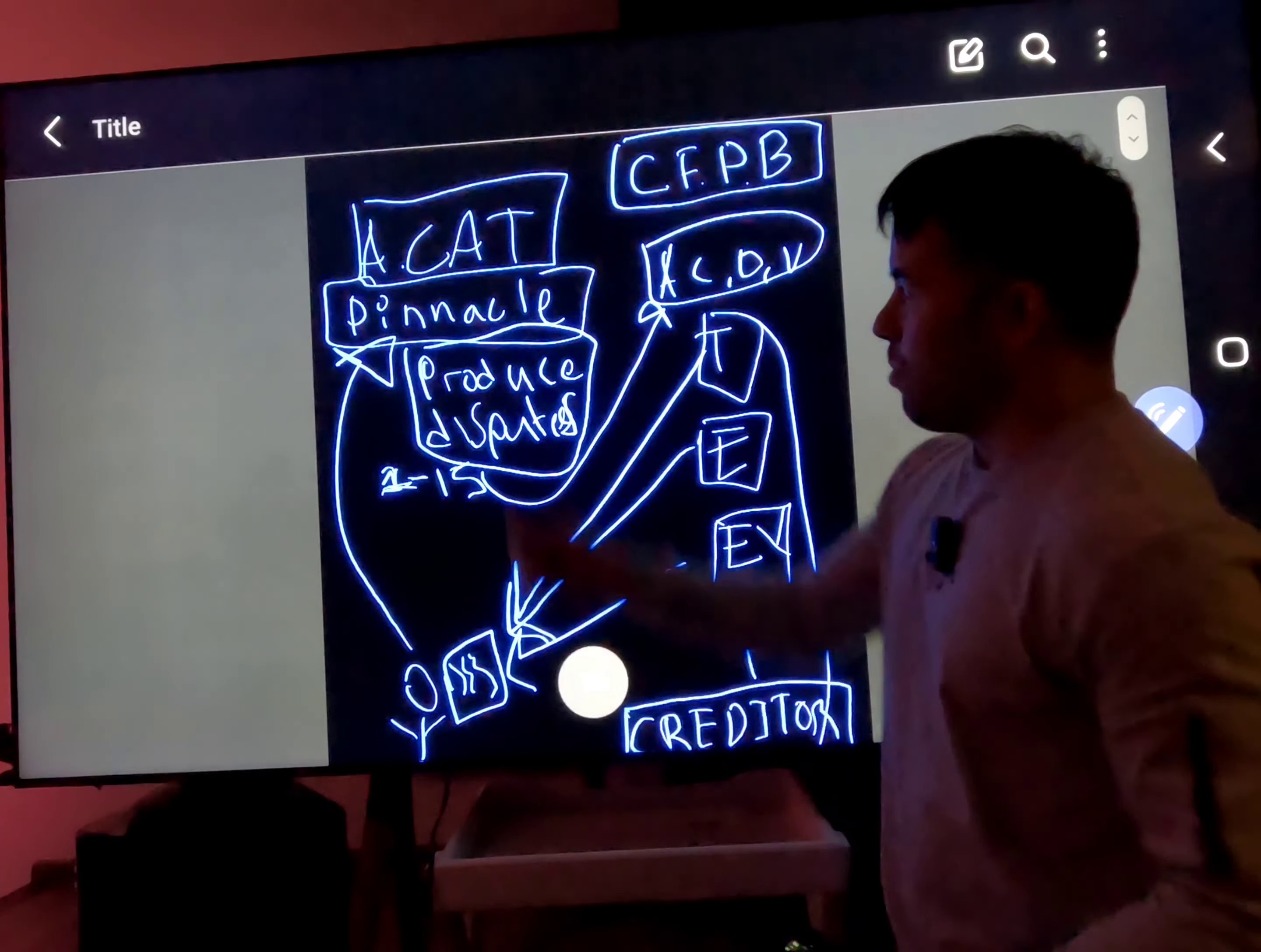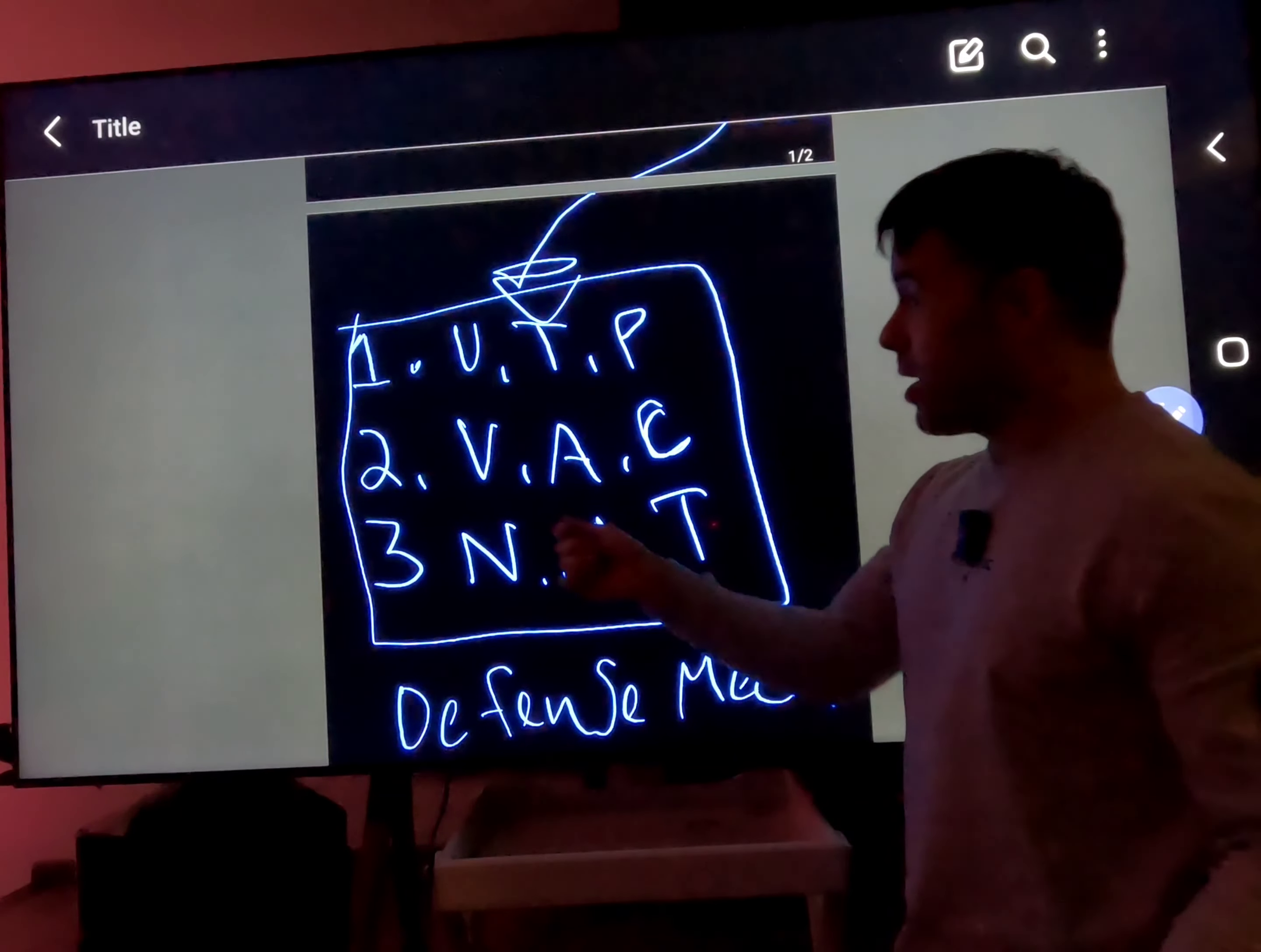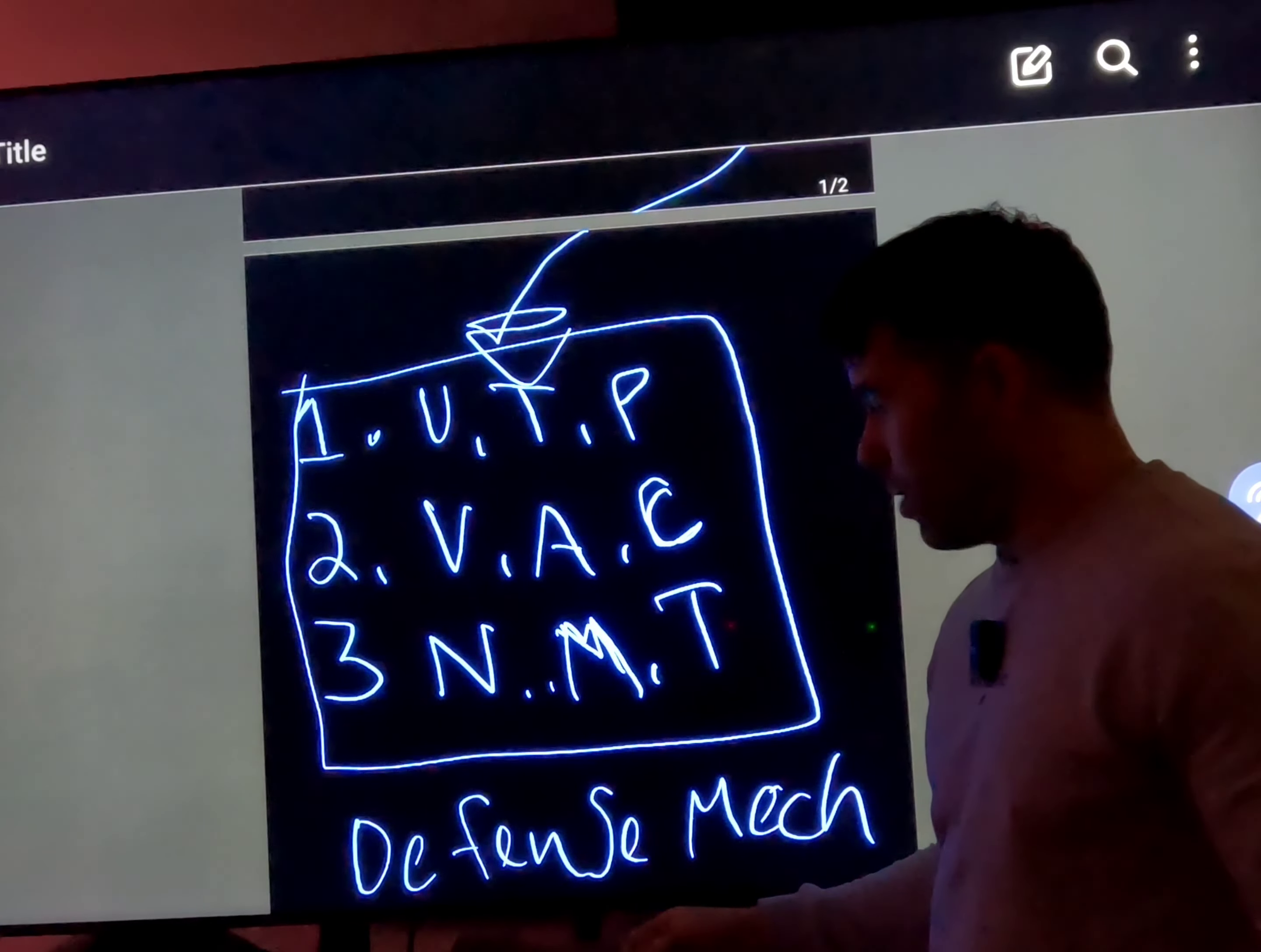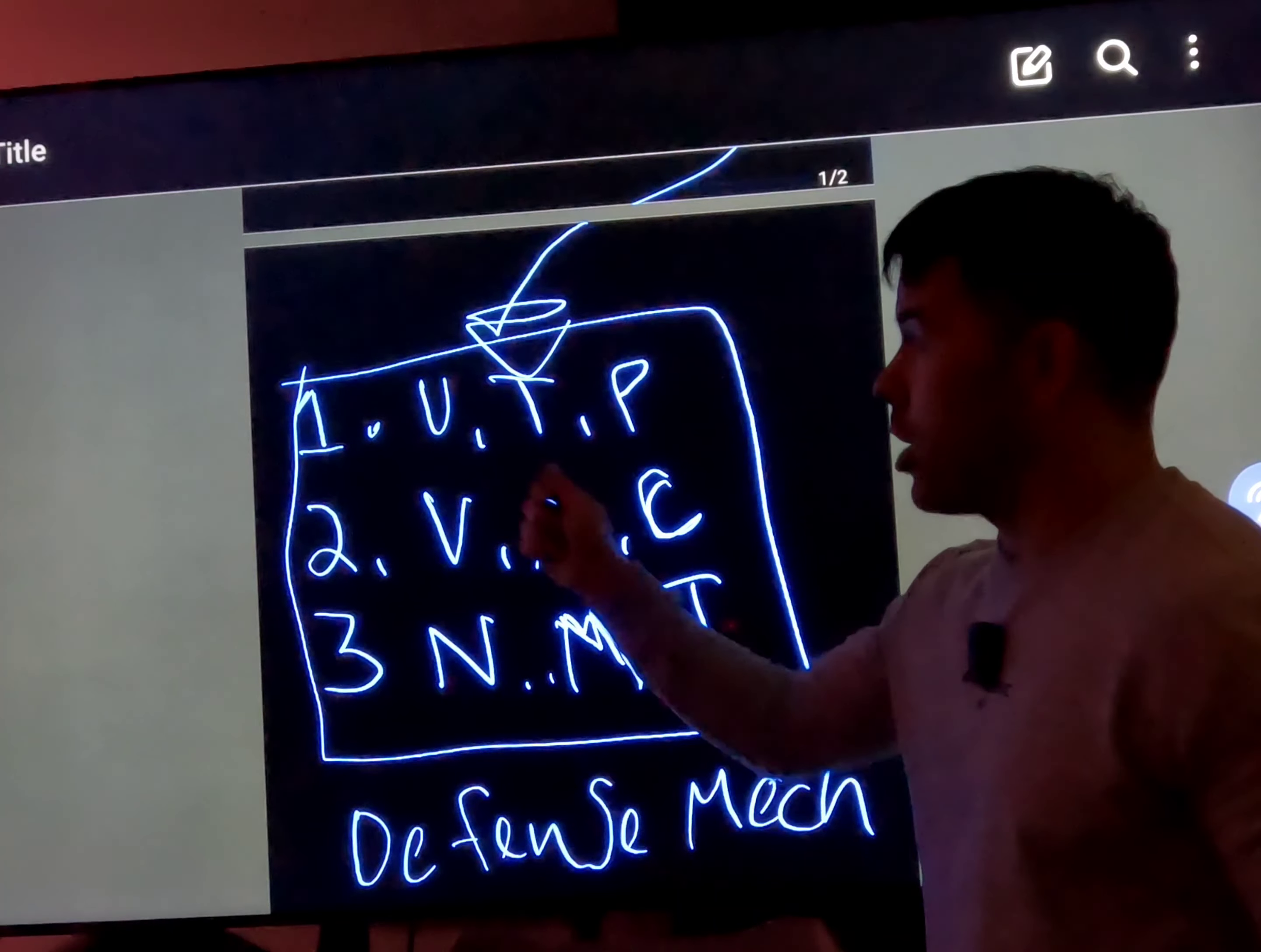You have this ACDV system that they have - TransUnion, Equifax, and Experian - and basically they jam your disputes. Pinnacle, they have a CAP. This ACDV method basically would block you three ways from what I know. Let me ask you, do you know what UTP is? No you don't. Do you know what VAC is? No you don't. If you don't know the abbreviated version, you don't know jack about credit repair. So do you know what NMT is? I kind of forgot what it is right now. I wrote this earlier but I forgot.